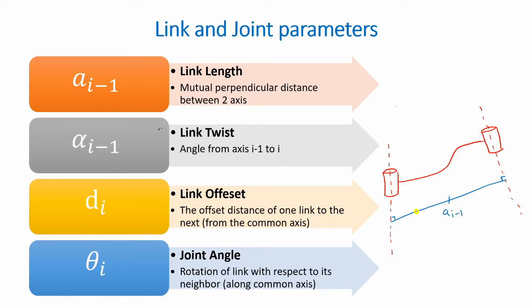Your second parameter would be the link twist. So if you assume this joint to be our ith joint, this would be our i-1. So this axis can be redrawn over here. Or something like that. And this angle would be our link twist, alpha i-1.